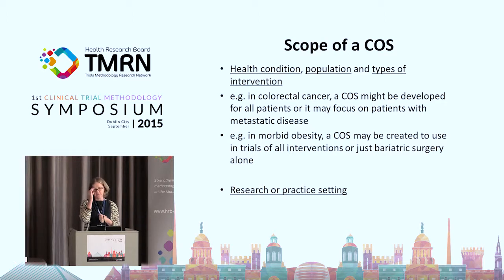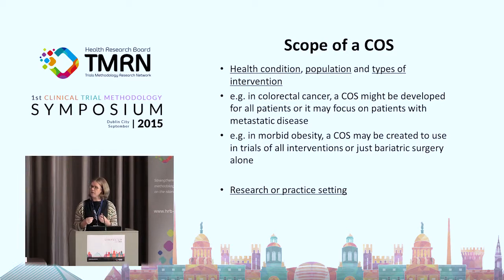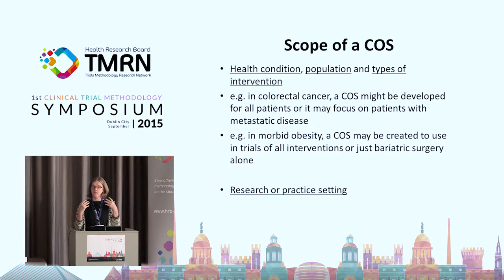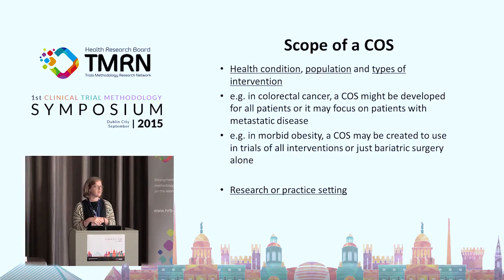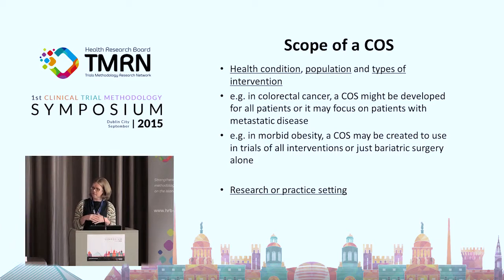In terms of core outcome sets, when we first started Comet we were thinking about the scope being very related to the PICO statement — the health condition, the population, and the types of intervention the core outcome set might apply to. Comet originally focused on effectiveness trials, but we've realised over the last few years that core outcome sets are also being developed for routine care. So we've added to the scope whether a core outcome set is purported to be relevant to research or to routine care.